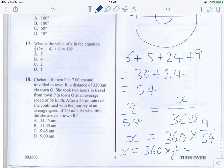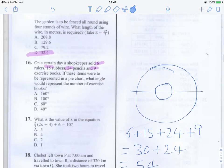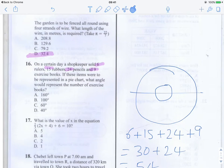So, the angle, our answer is 60 degrees. 60 degrees in the pie chart would represent the number of exercise books, so our answer is C, 60 degrees.